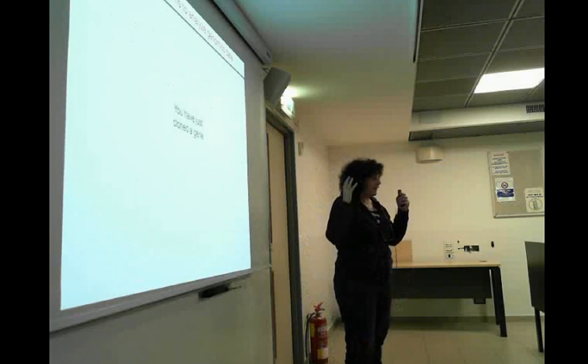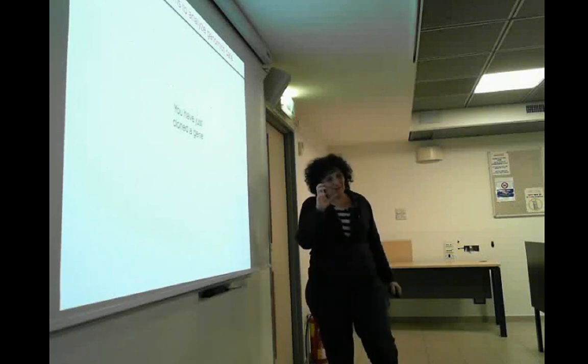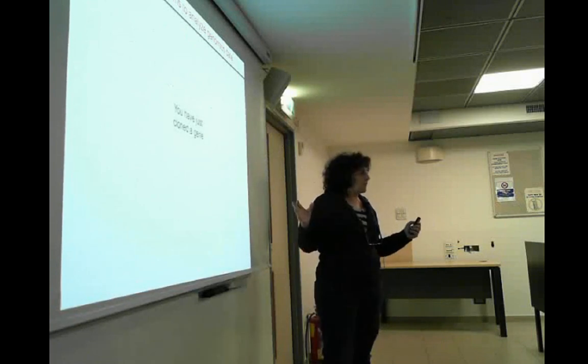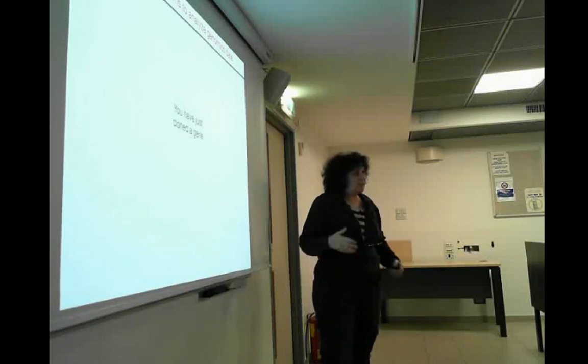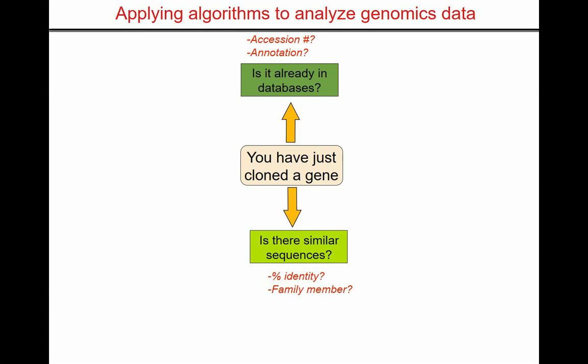Just to put everybody in a biological thinking mindset rather than computational thinking - that's the reason we are here. Let's say you just cloned a gene, or you just finished a large set of experiments and have not one gene but hundreds of genes you're interested in. Obviously you want to know initially: is it already known? Is it in some database, and if so what's the accession, what's the annotation? And is there any similar sequence? It could be that your protein is from guinea pig but there is beautiful data on another rodent.